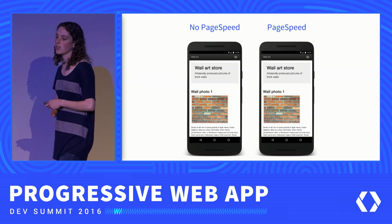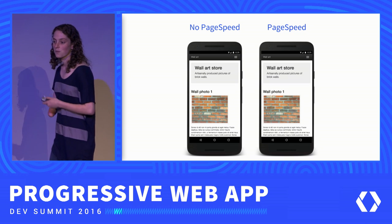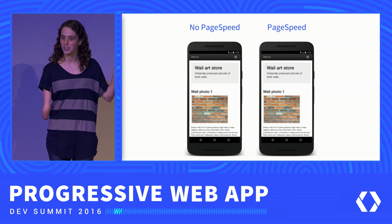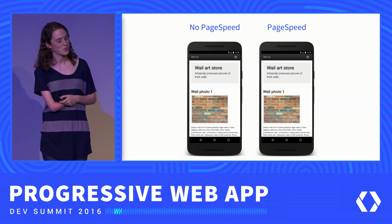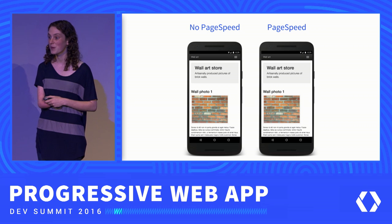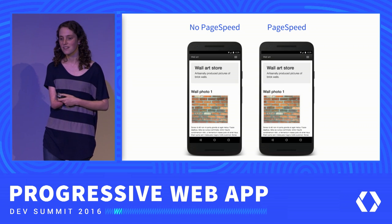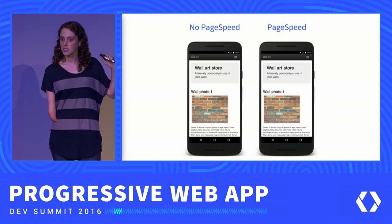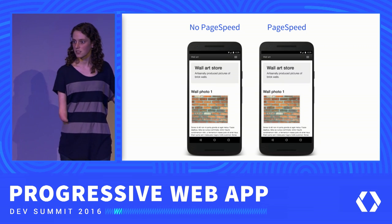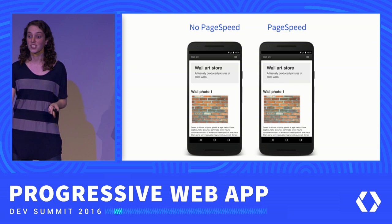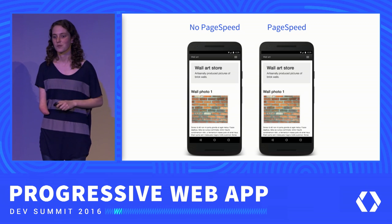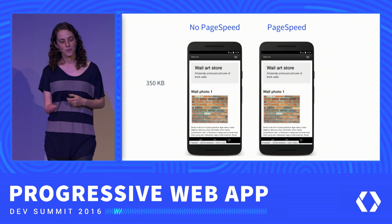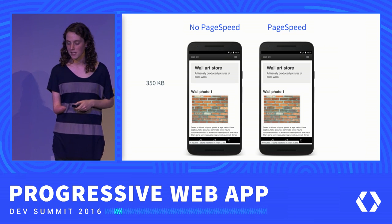Just to give an example, this is a mock storefront that we built. On the left, you'll see a screenshot of the store with no PageSpeed, and on the right, you'll see it with PageSpeed. These look really familiar and very similar — functionally identical. But if you look at the one on the left, this is a 350 kilobyte page, relatively lightweight compared to the average website. But simulating a 2G connection, this page can take over a minute to load.